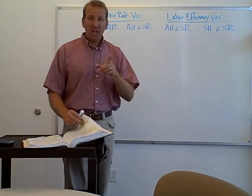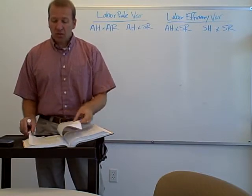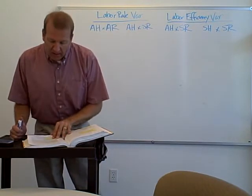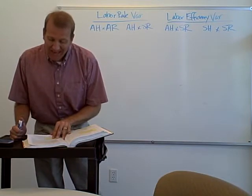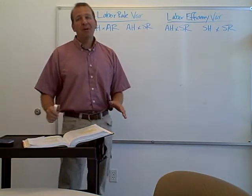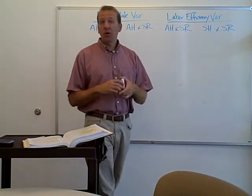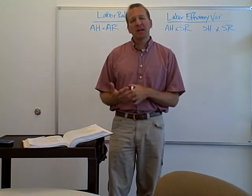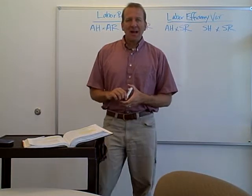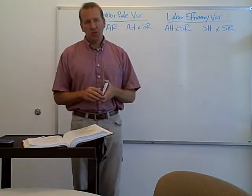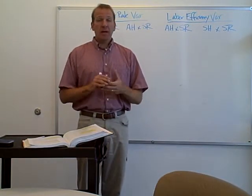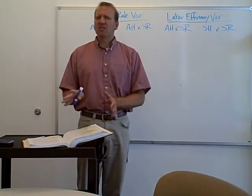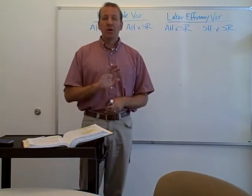Let me point something out before we go through this example. The textbook does go over some journal entries for those variances on page 955. You're not going to be tested on that. Many of your homework assignments will have you doing those journal entries. I'd recommend taking a look at them because they're pretty simple. Most of you have had Accounting 111 and 230 and understand journal entries, so they'll make perfect sense.